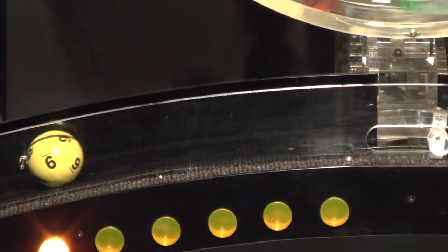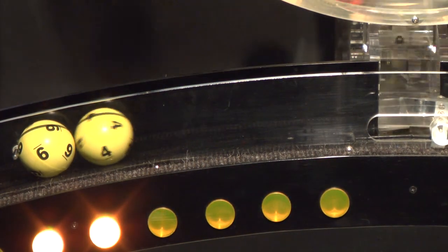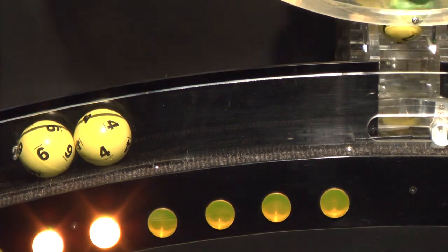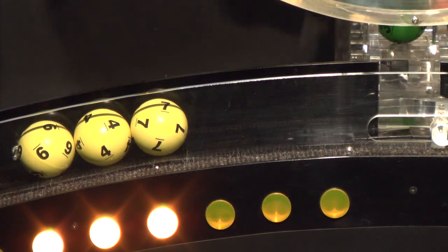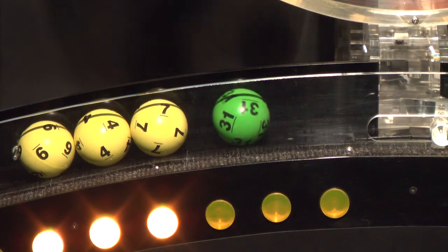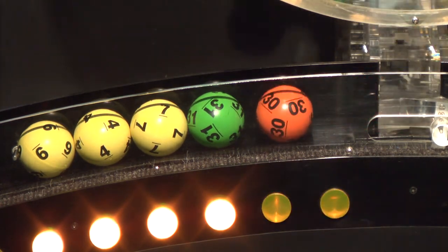Our first number up is number 9. After that we have number 4. And here comes number 7. Up next is 31. And the final ball in this sequence is number 30.